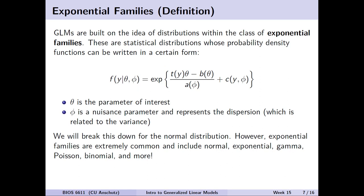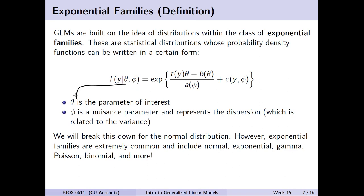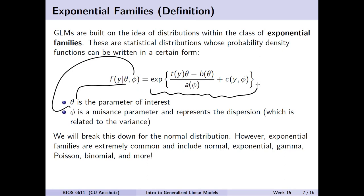In this exponential family form, theta will be our parameter of interest — for example, in the normal distribution, that could be the mean mu. We then have this phi parameter, representing a nuisance parameter and also the dispersion, which is related to variance. In the normal distribution, phi could represent the variance sigma squared or the standard deviation sigma, depending on what quantities are assumed known. These components give us the ability to calculate summary statistics and use generalized linear models more efficiently.